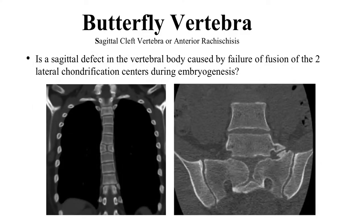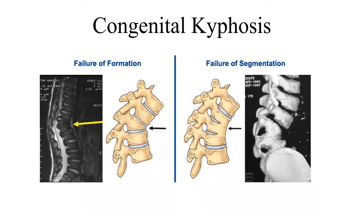Segmentation failure can be partial or complete, unilateral or bilateral. Butterfly vertebra is a sagittal defect in the vertebral body caused by failure of fusion of the two lateral chondrification centers during embryogenesis; it is often encountered in patients with multiple spinal anomalies.